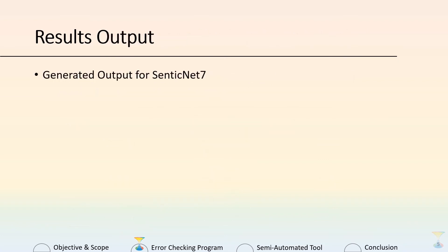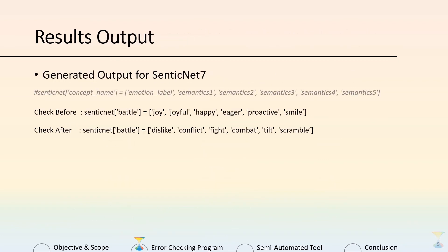Here is an example of the output generated from the error checking program. In the case where an existing concept is found but with a different polarity, this is something we want to check. For example, the concept 'battle' was tagged under joy, with semantics of joyful, happy, and smile — which is more positive in the existing knowledge base. But from our results, 'battle' should be tagged more negatively, with the emotion label of dislike and semantics like conflict, fight, and combat.